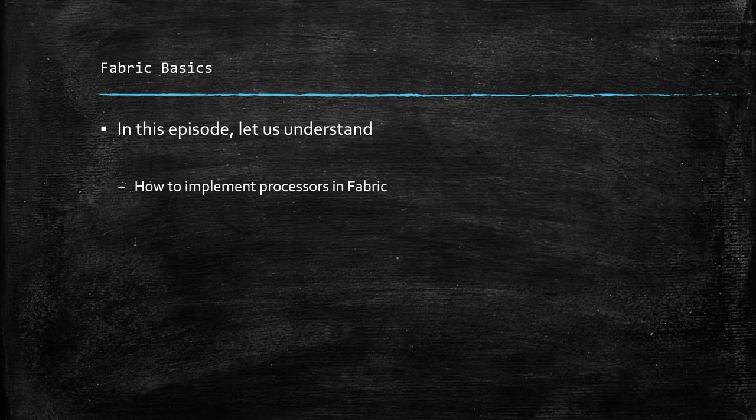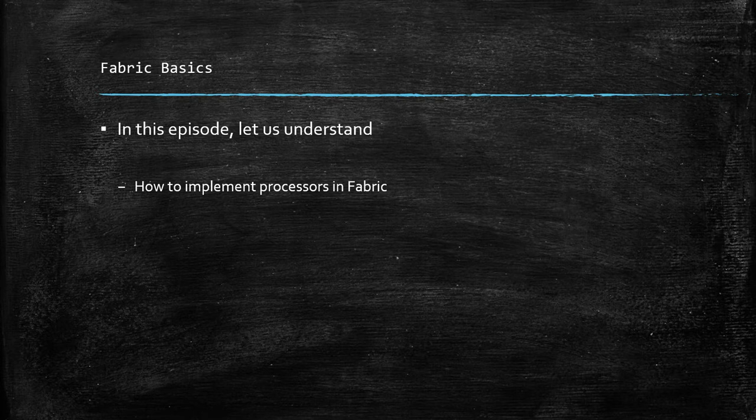Within Fabric, while you are configuring integration services, orchestration services, or object services, you have the capability to add your custom code into the Fabric. For example, if you want to do some processing before executing an integration service within Fabric, you will be able to add your custom code in the form of a preprocessor.